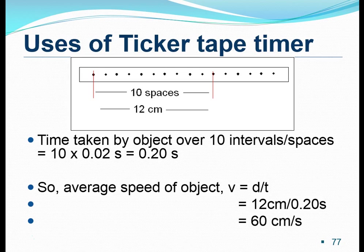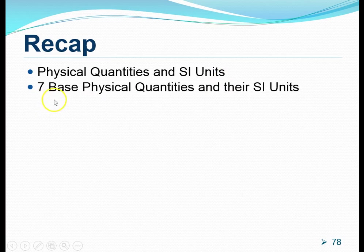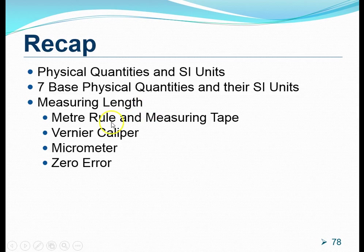Now, before I end the video, I would like to take the opportunity to go through the key concepts we have covered in chapter 1. Now, recall that we have covered this thing called the physical quantities, and these are none other than quantities that can be measured, and it is made up of a magnitude and units. We have also talked about SI units. We have covered these seven base physical quantities and their respective SI units as well. I would like to also urge you to remember the base physical quantities and their respective SI units and symbol. We have also measured length with the meter rule and measuring tape. We have looked at the vernier caliper micrometer and have dealt with zero errors for both of them.